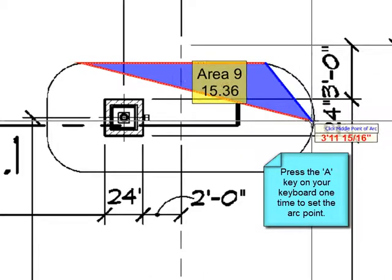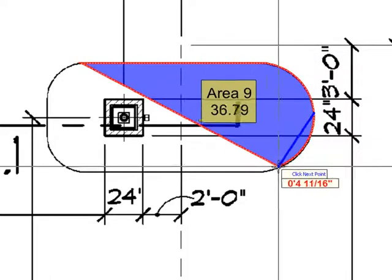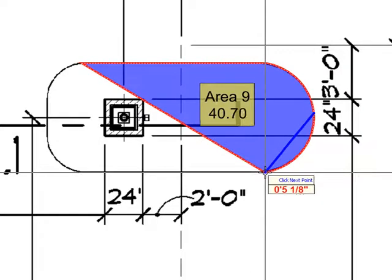So I'm just going to select somewhere along my radius here. And I'm just going to go and finish that at the end point of the arc.